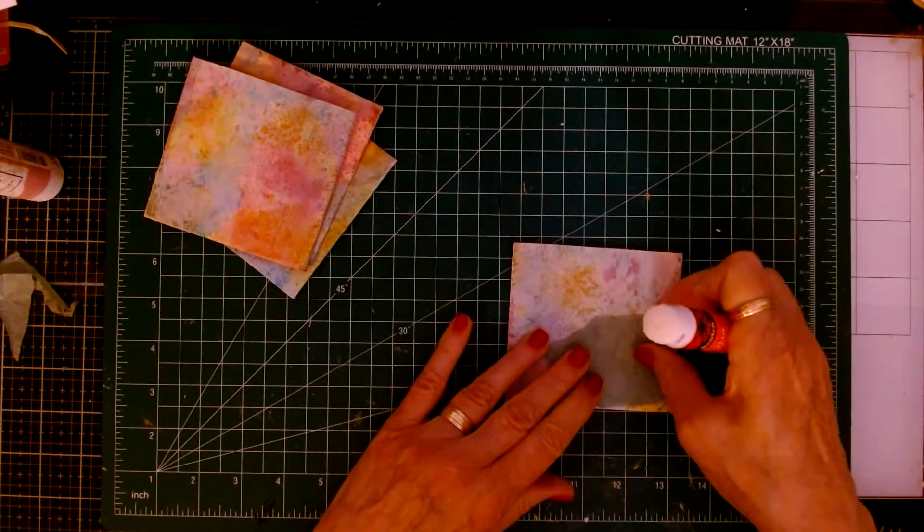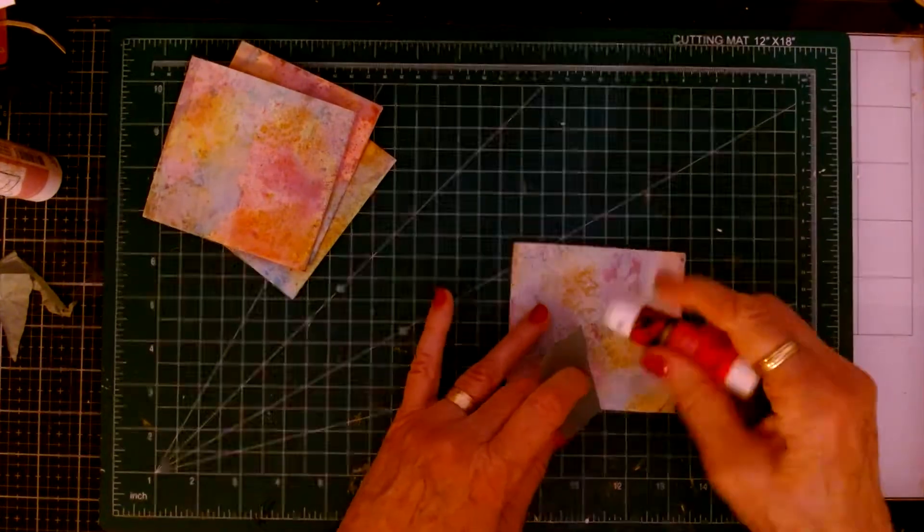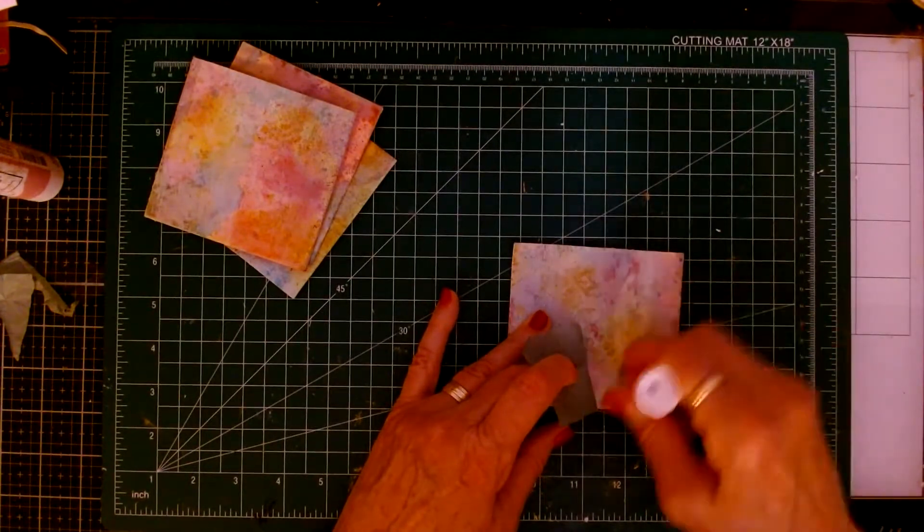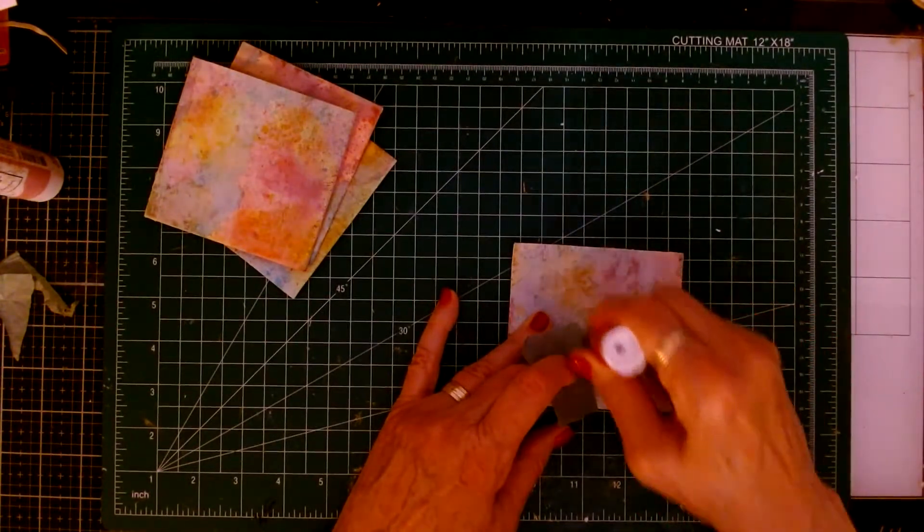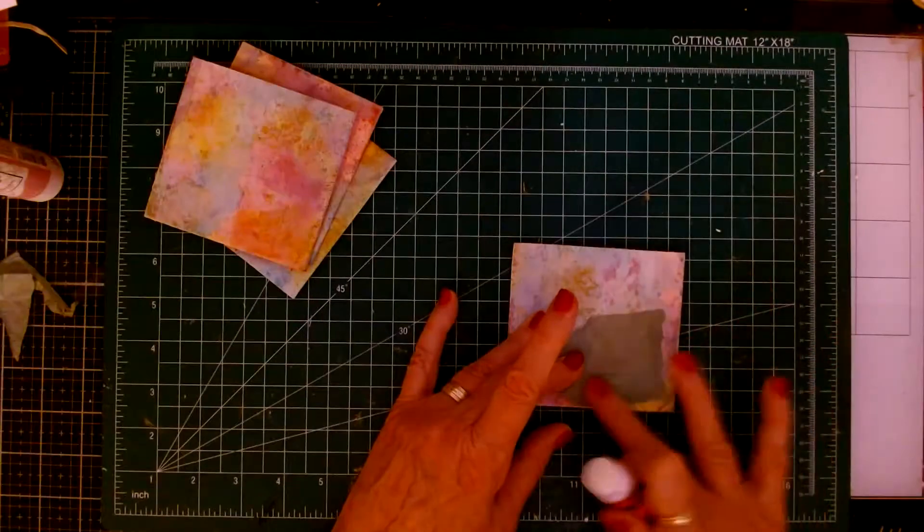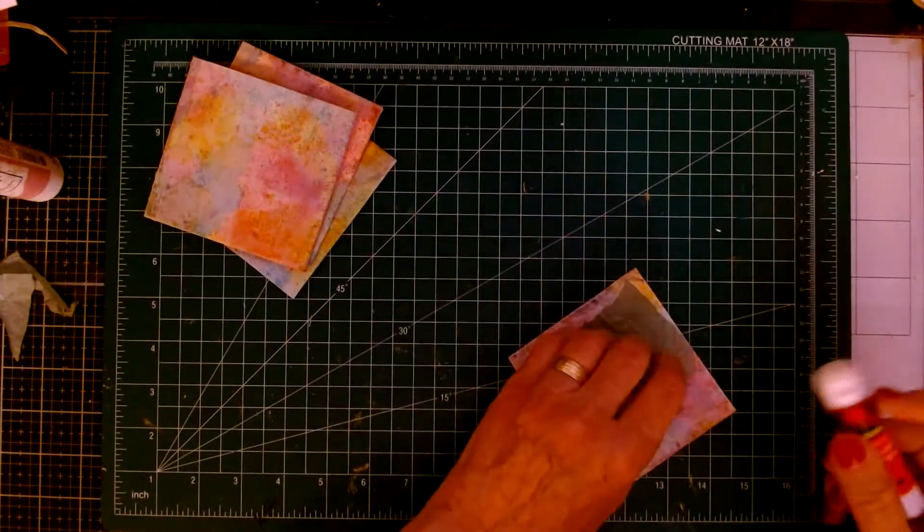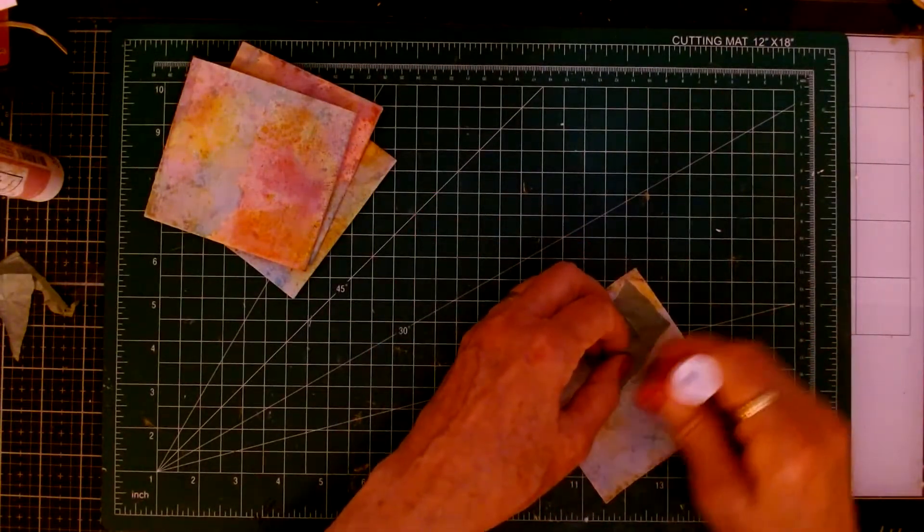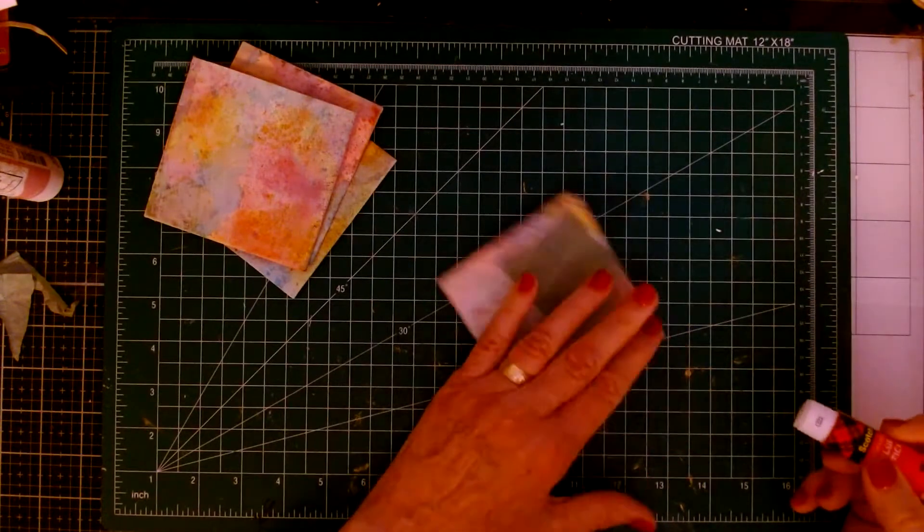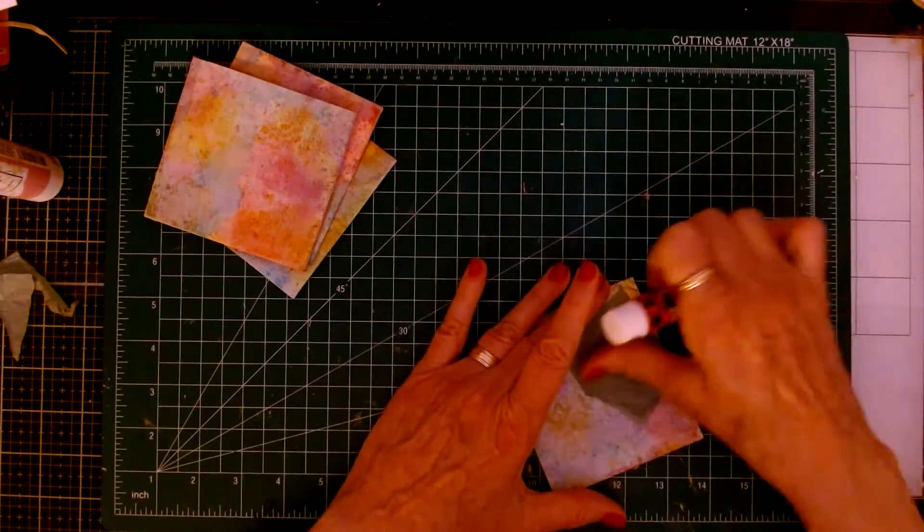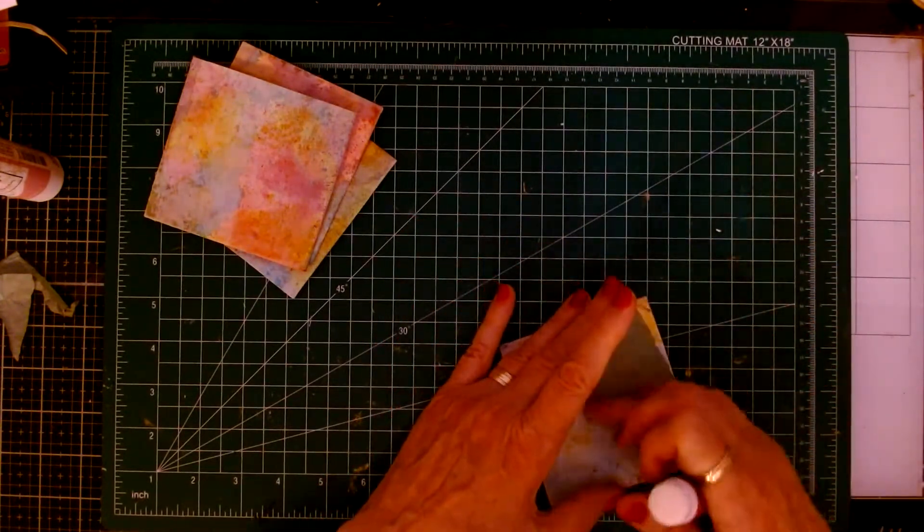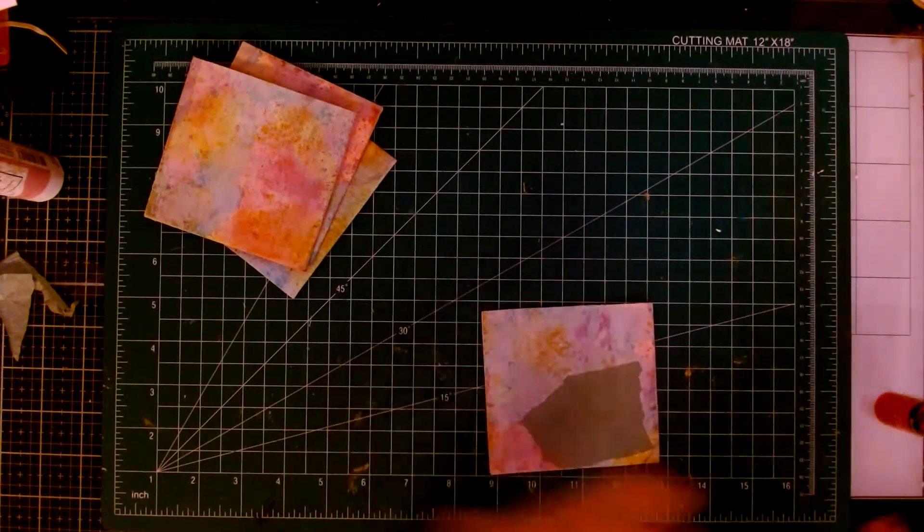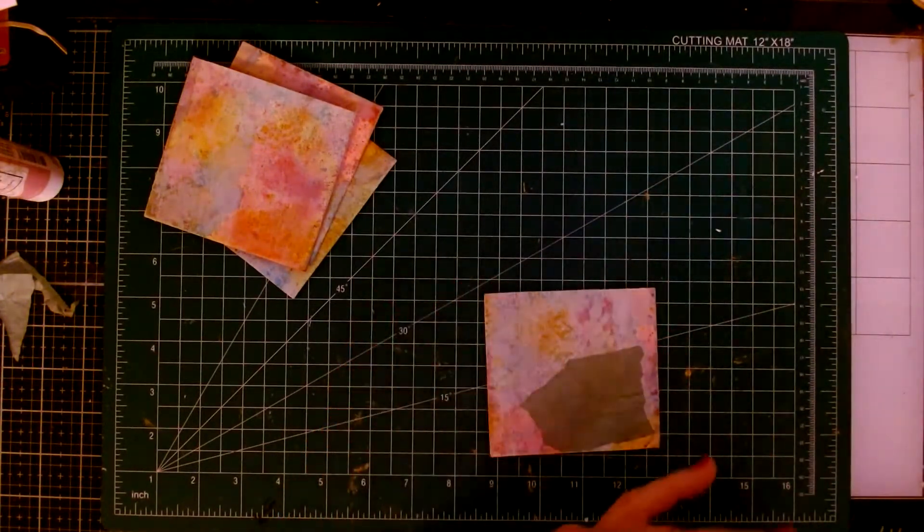Maybe I don't want to cover up too much, just to put a little bit down. And I find it easier using the glue stick. And of course, with the glue stick, I don't put the glue stick directly on the tissue paper because it's going to tear it apart.